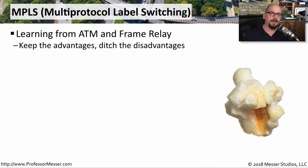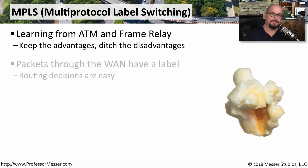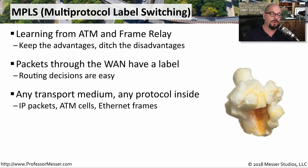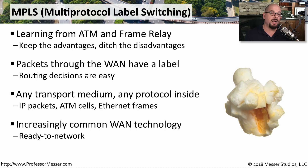A much more modern wide area network technology is MPLS, or Multi-Protocol Label Switching. We looked at Frame Relay and ATM and took the best of both of those topologies to build MPLS. In a method similar to Frame Relay, MPLS data is put onto the WAN with a label that designates what the destination is. This makes it easy for the provider to route that traffic through the core of the network. We can send many types of traffic over MPLS — IP packets, ATM cells, and even ethernet frames. MPLS has become a very common way of providing wide area network connectivity, and it's easy to find services and hardware that support an MPLS network.